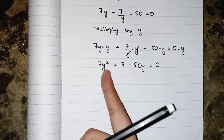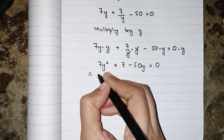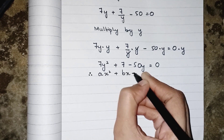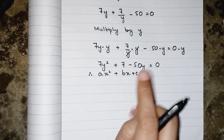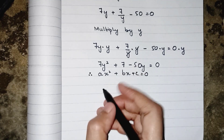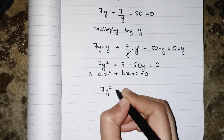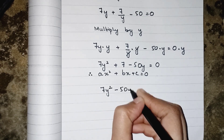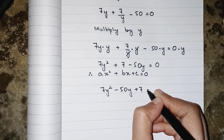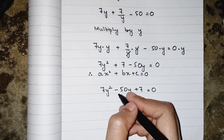Now we have to arrange this equation because it becomes a quadratic equation and we have to write it in standard form: ax² + bx + c = 0. The variable with power 2 comes first, power 1 in the middle, giving us 7y² minus 50y plus 7 equals to 0.